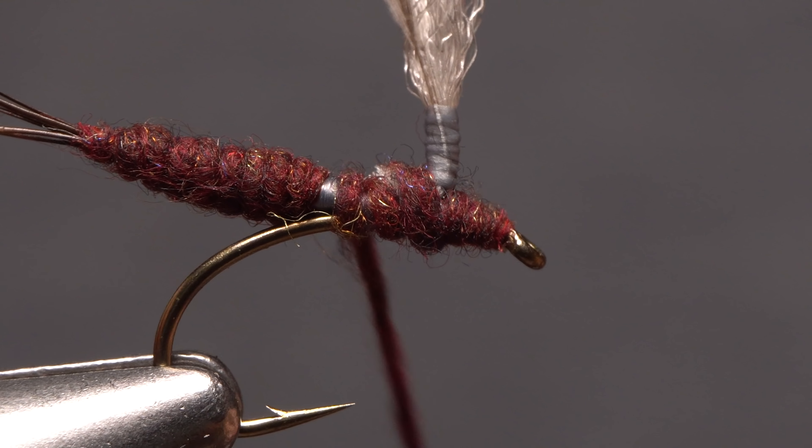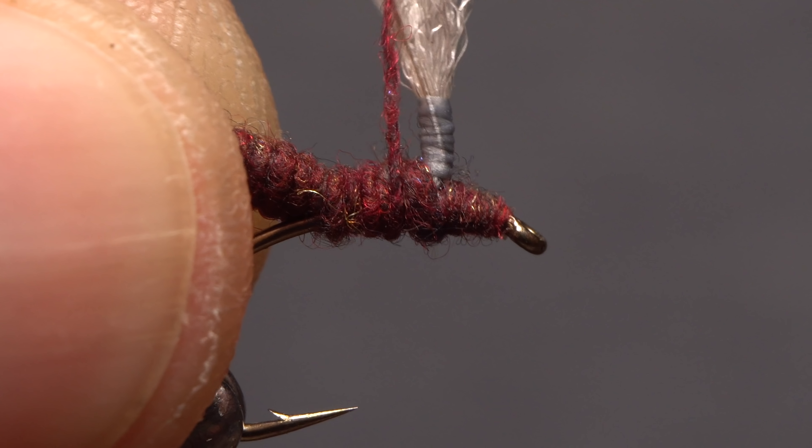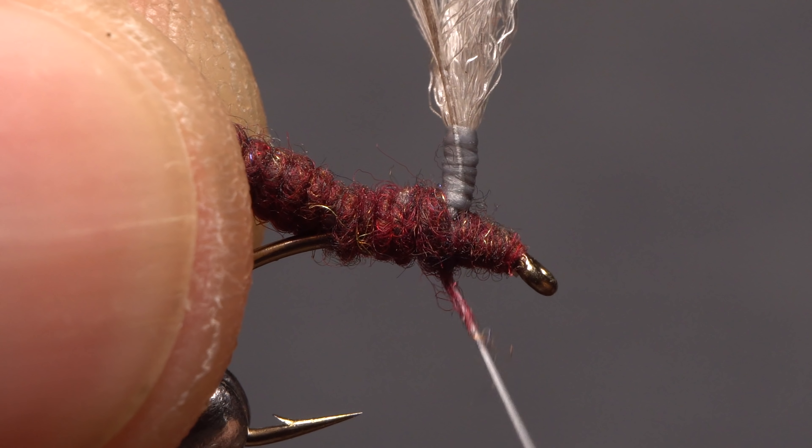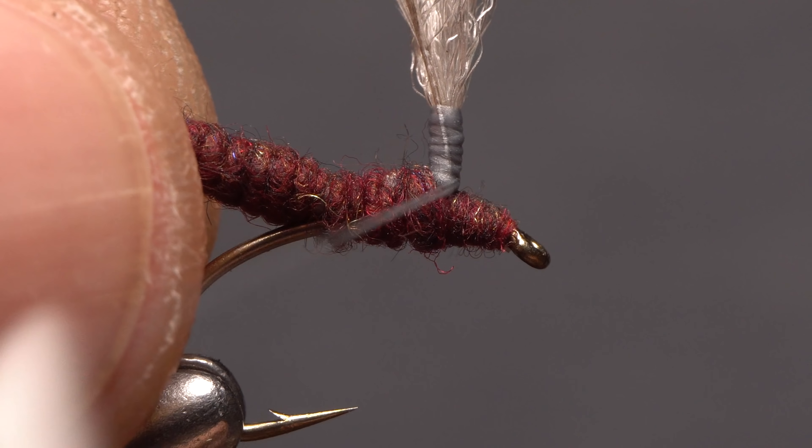Make sure to get all the gray underbody thread covered up in the process. Go around the back of the post and leave your tying thread in front of it on the near side of the hook.